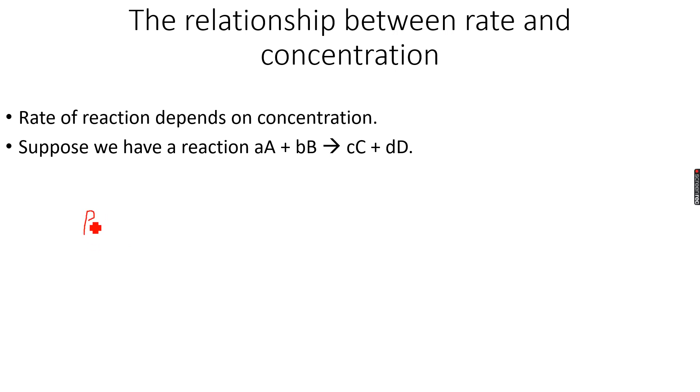For this reaction where I have taken random substances A, B, C and D, rate is equal to a constant k, which is known as the rate constant, times the concentration of A to the power of m, multiplied by the concentration of B to the power of n.